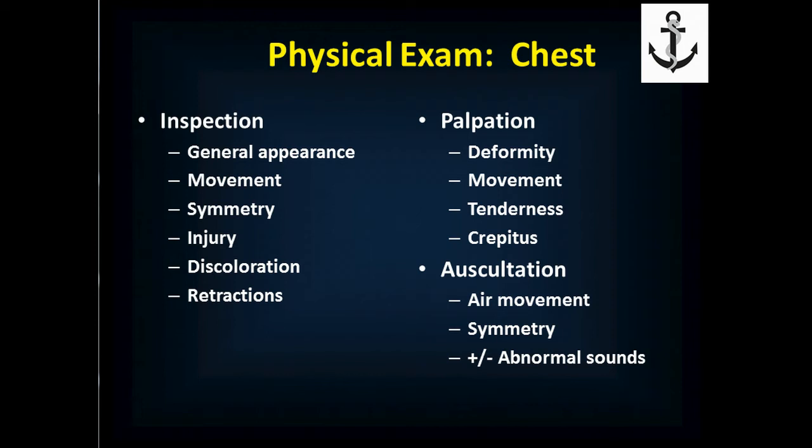Then feel for crepitus. With chest injuries, air can be released from the lung into the chest wall and soft tissues, so you're actually feeling air bubbles popping in the skin. It feels like taking a breakfast cereal like Rice Krispies, putting it between layers of saran wrap, and pushing down — that popping feeling under your fingers is crepitus. When you feel that on someone's chest, you know they have a lung injury, that air is escaping into the chest. You don't need a chest x-ray to confirm it.